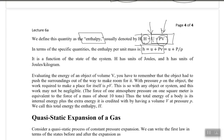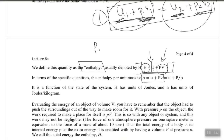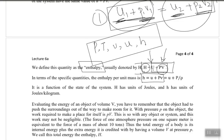Enthalpy is defined at the microscopic level and is a state function. We have now defined several state functions: pressure, temperature, volume, internal energy, and now enthalpy. We are left with one more property to be defined in the second law of thermodynamics — entropy. So we have defined many state functions that we will use in thermodynamics.